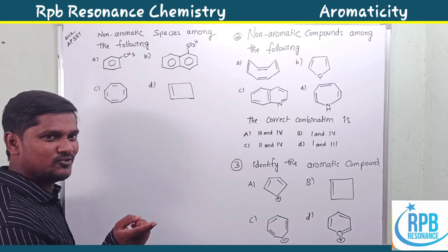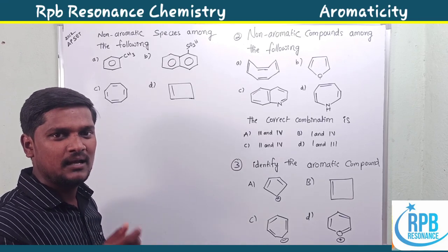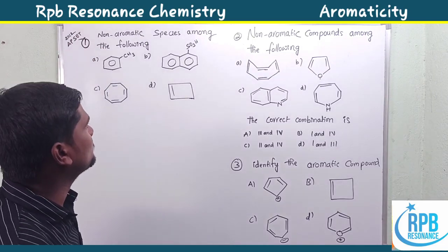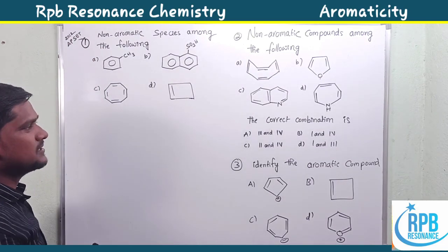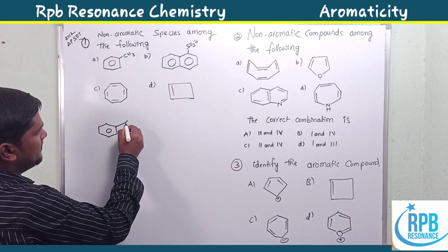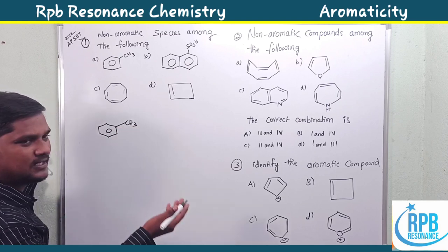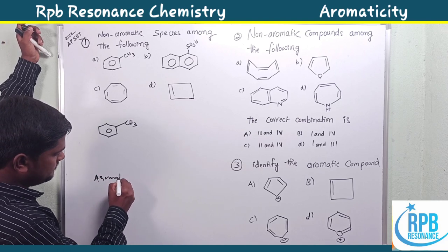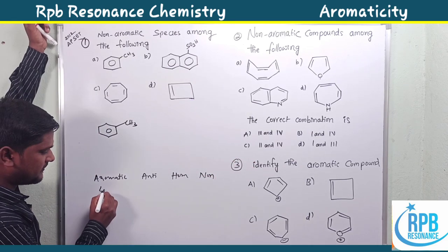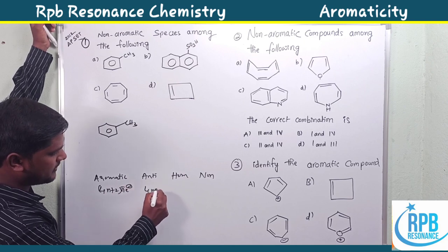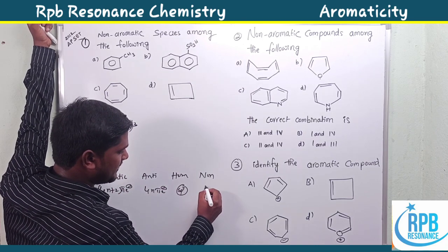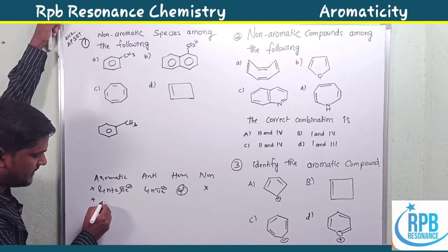After watching my aromaticity videos, you can solve each and every question very directly and simply within a minute. Now the first question is from JEE 2012: which is the non-aromatic species among the four given options? Aromaticity can be of several types — aromatic, anti-aromatic, homo-aromatic, and non-aromatic. Aromatic follows the 4n+2 pi electron system; anti-aromatic follows the 4n pi electron system; homo-aromatic has one sp3 carbon along with delocalization.